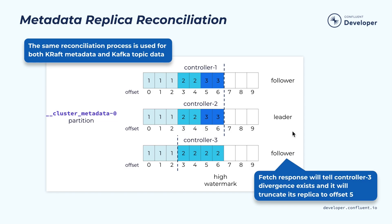Once the new leader is selected, a log reconciliation process ensures all replicas are consistent. Initially, the follower's data may be inconsistent with the new leader because some records were never committed. The follower goes through a similar process as the data replication reconciliation logic by sending its epoch and offset. Eventually, the follower's log is truncated and made consistent with the leader.